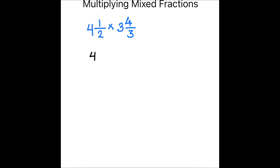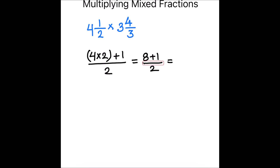Let's convert four and one half into an improper fraction. So this will be four times two plus one, divided by two. Eight plus one divided by two — eight plus one is nine, divided by two. This is how we convert four and one half into an improper fraction: nine over two.